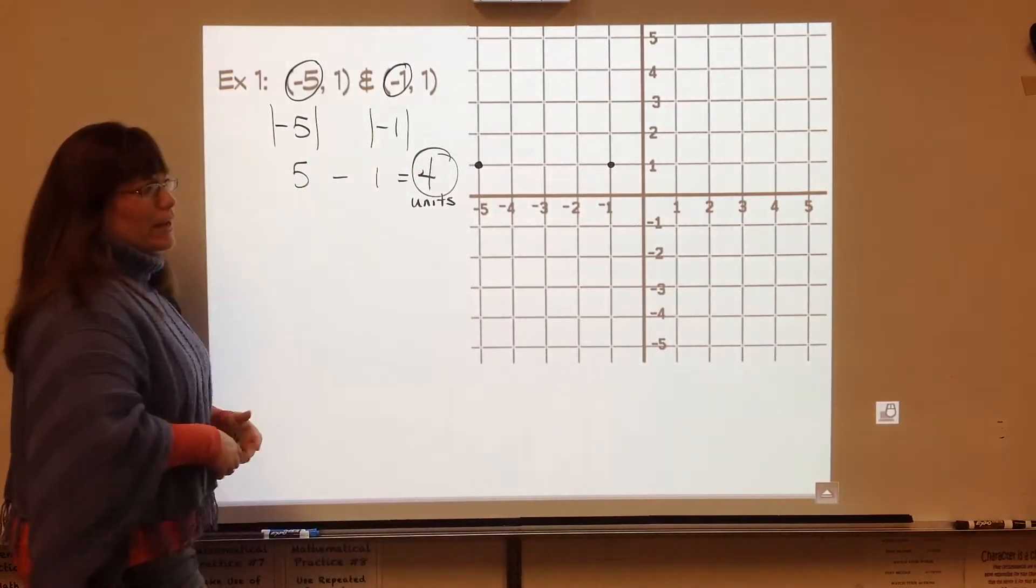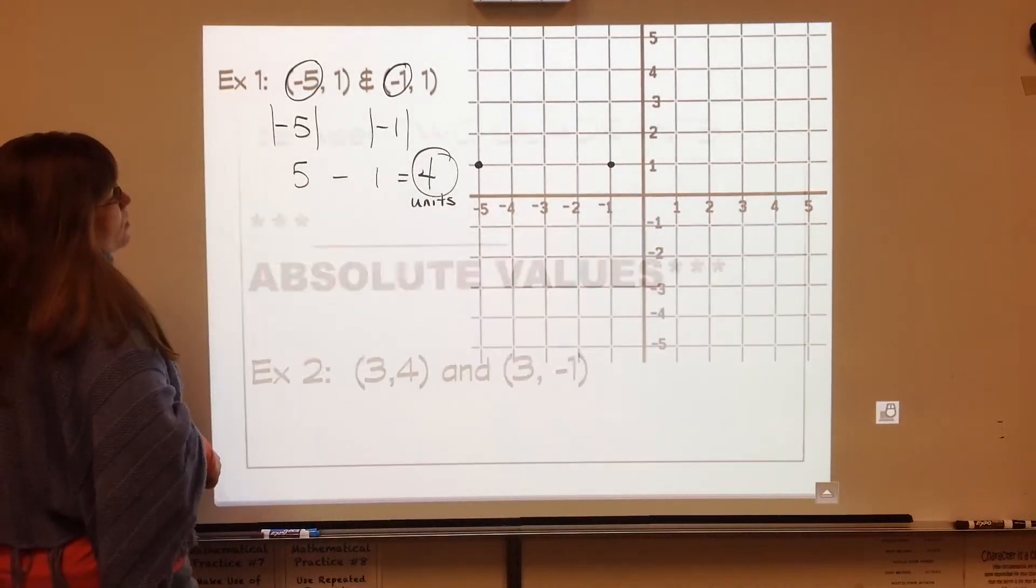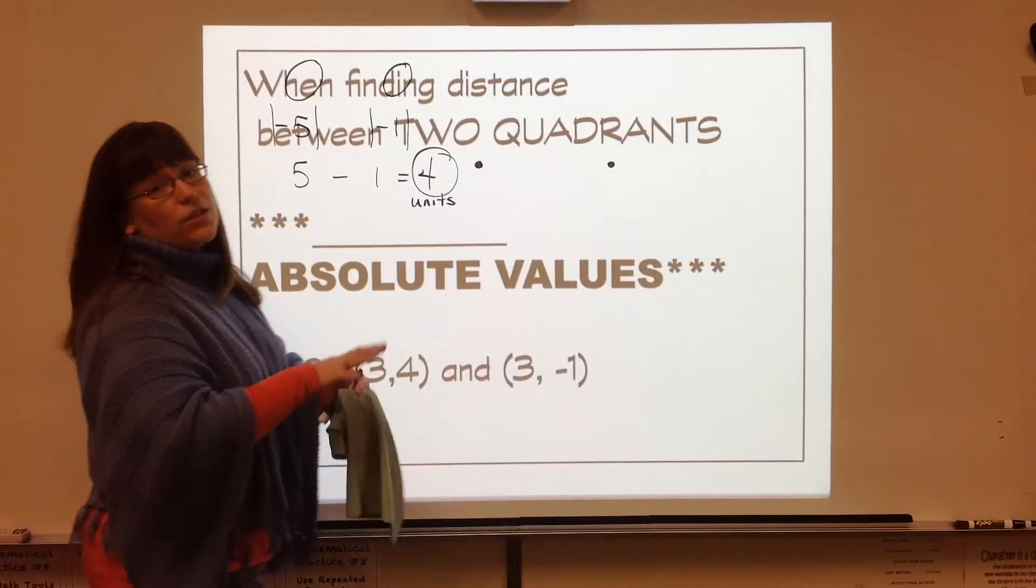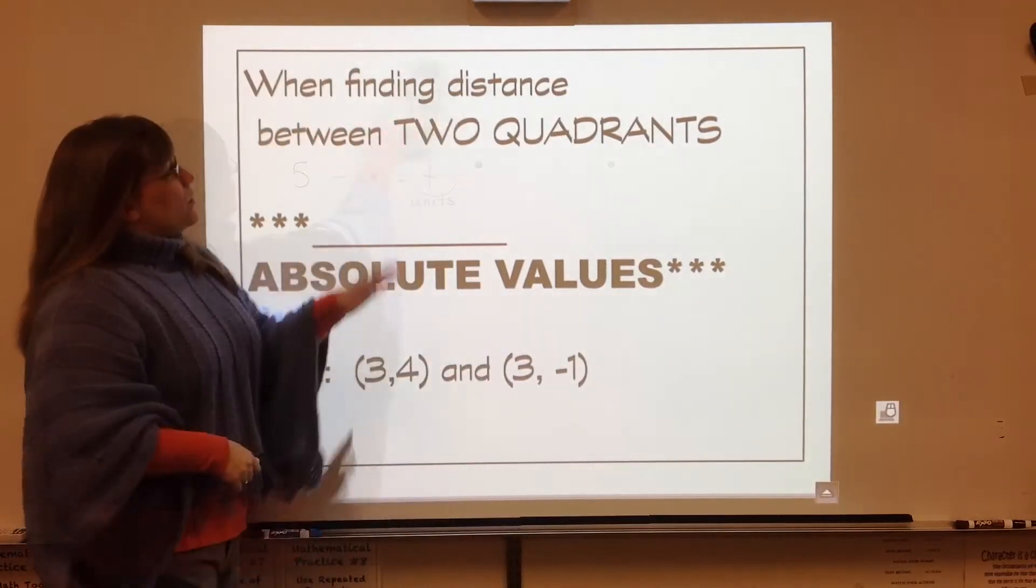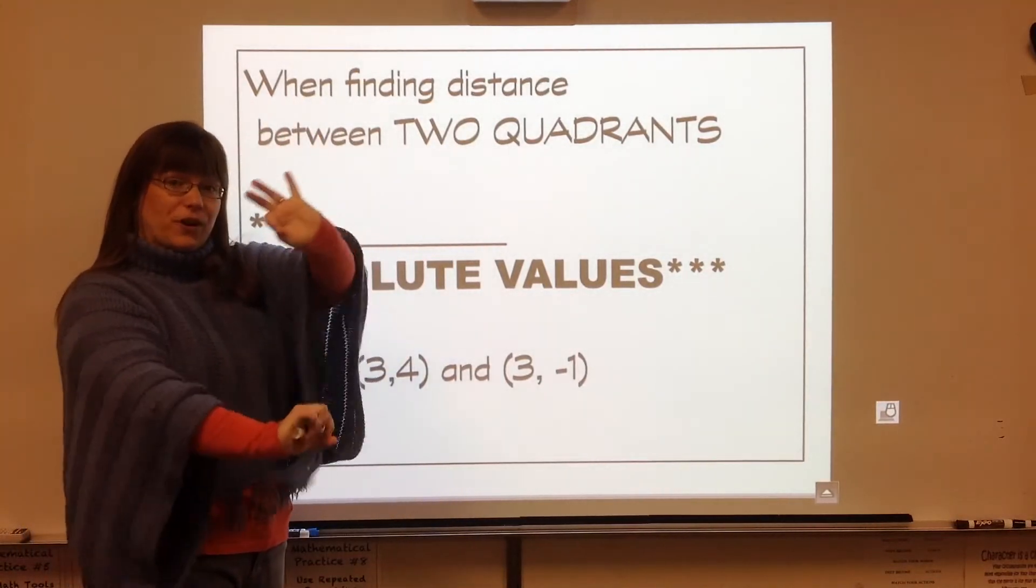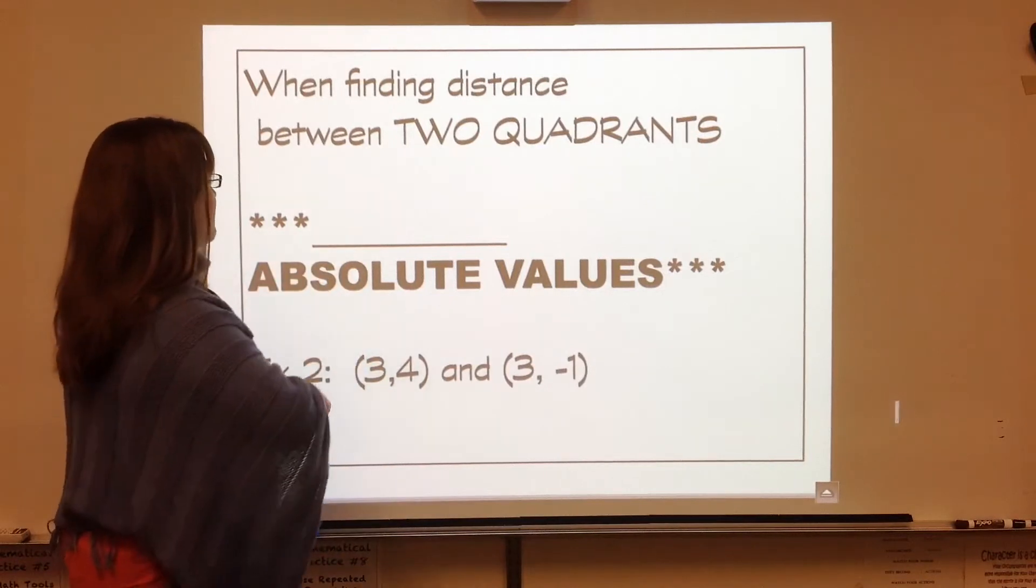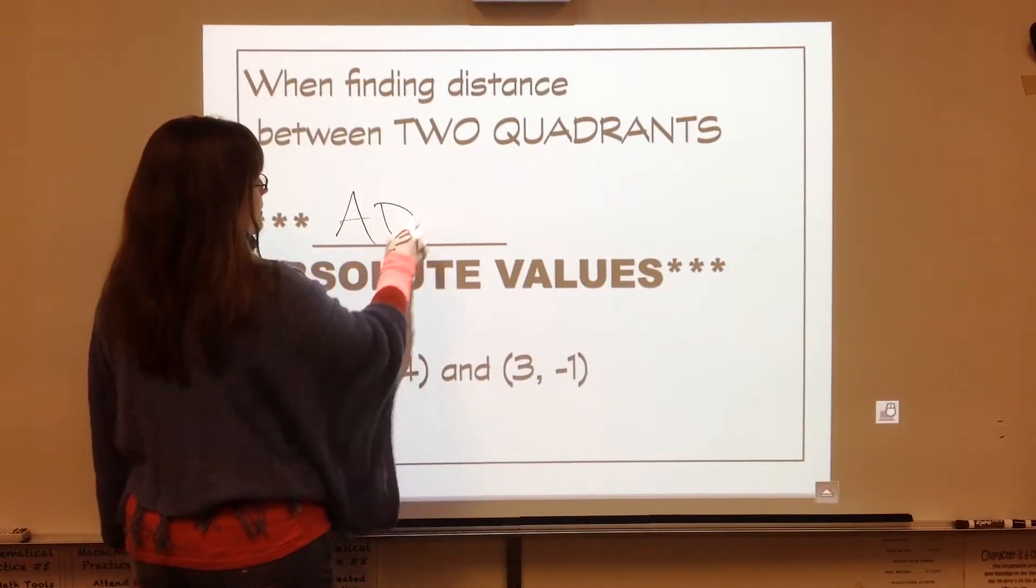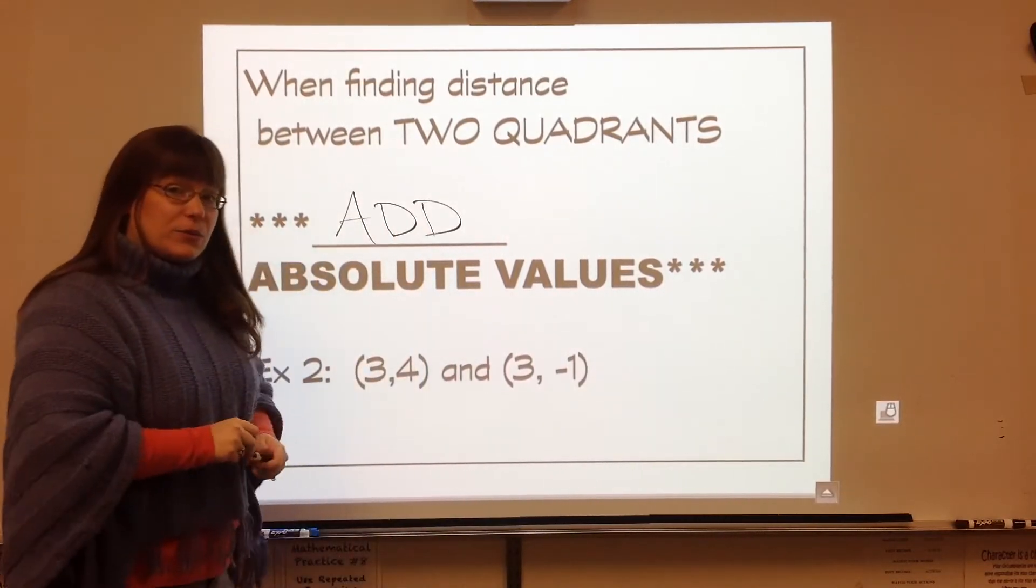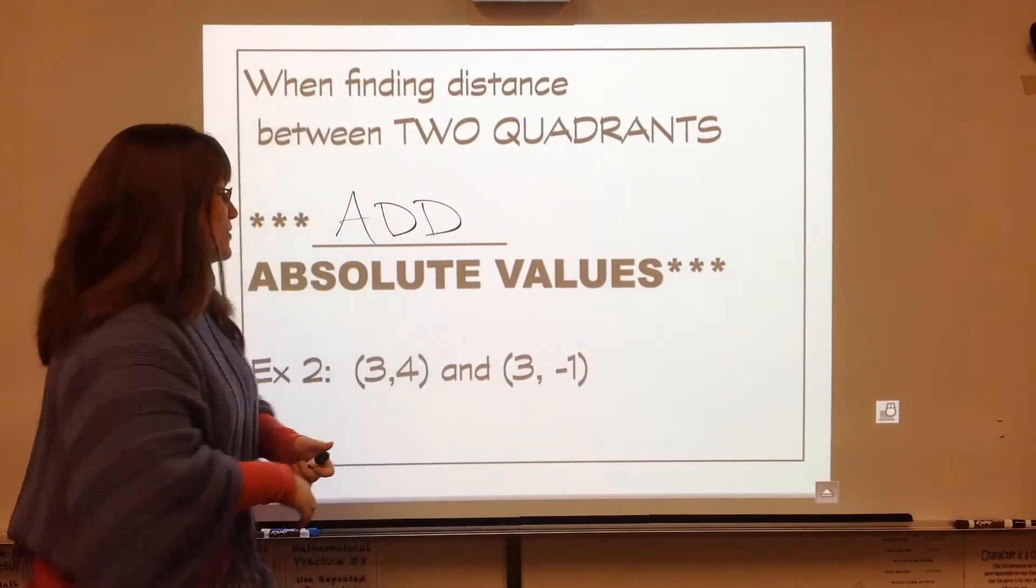So let's try example two. It's going to be a different kind of situation with points in two different quadrants. So when finding distance and the points are in two different quadrants, it crosses an axis, you have to add the absolute values. And we have a second example here. I'm going to go back to my grid and show you with that picture.